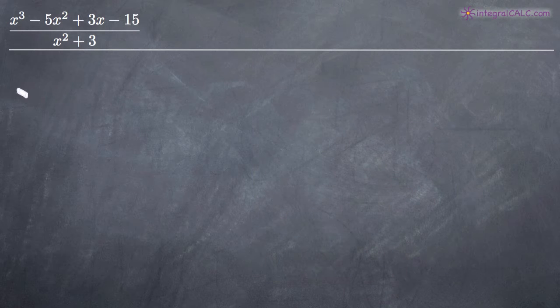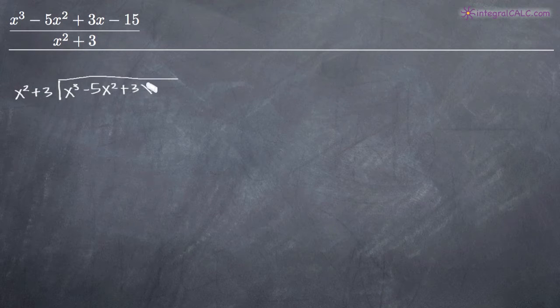In order to set up our long division problem, we need to put our denominator out in front and our numerator inside the bracket here: x cubed minus 5x squared plus 3x minus 15.